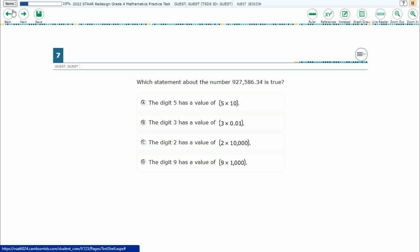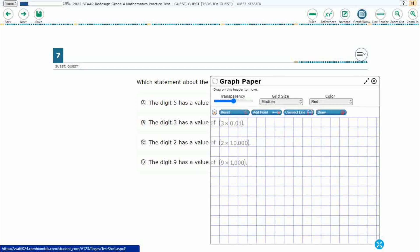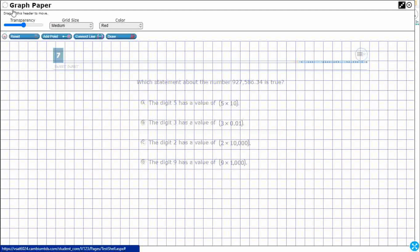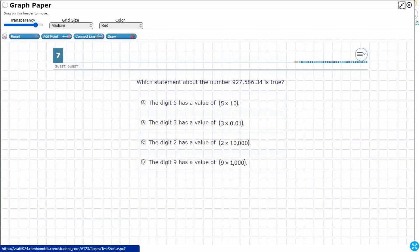Alright, so we've got this big number here, 927,586.34. We just need to find which of these statements is true. So let's open up our Graph Draw feature, expand it out with those arrows that are diagonal, make it a little bit more transparent so we can see what's going on.